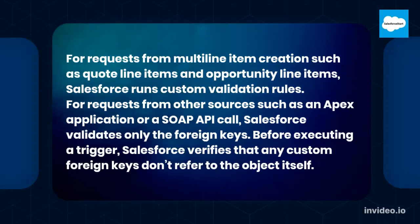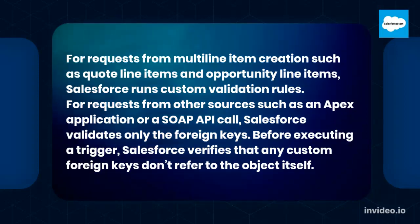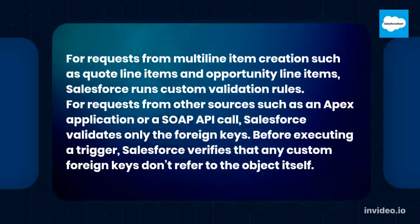For requests from multi-line item creation such as quote line items and opportunity line items, Salesforce runs custom validation rules. For requests from other sources such as an Apex application or a SOAP API call, Salesforce validates only the foreign keys. Before executing a trigger, Salesforce verifies that any custom foreign keys don't refer to the object itself.